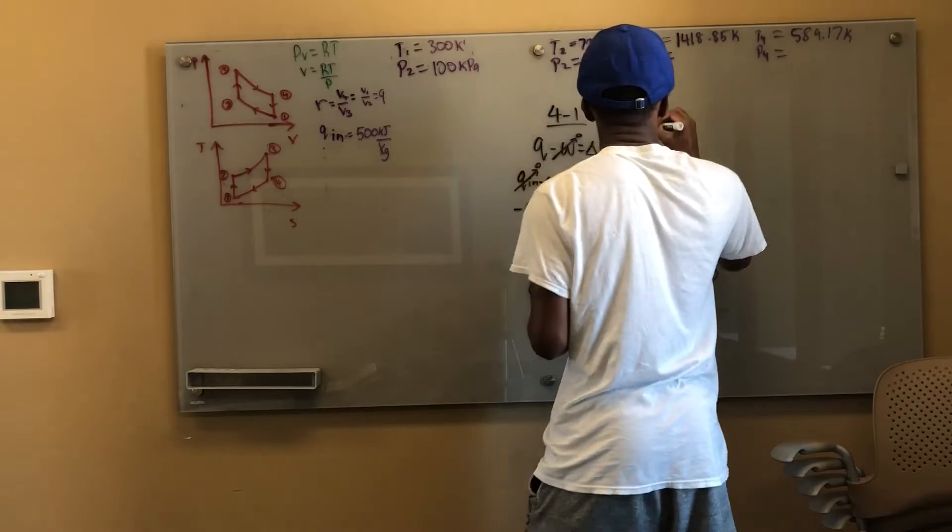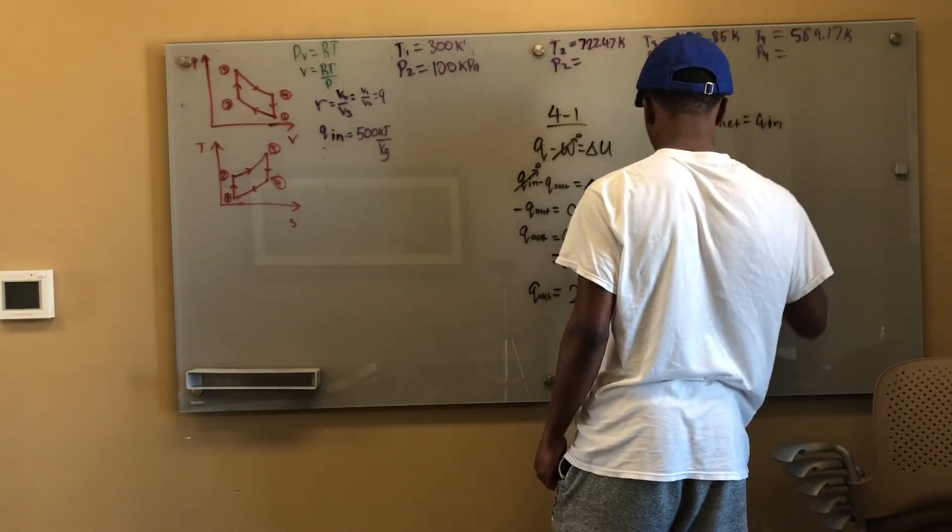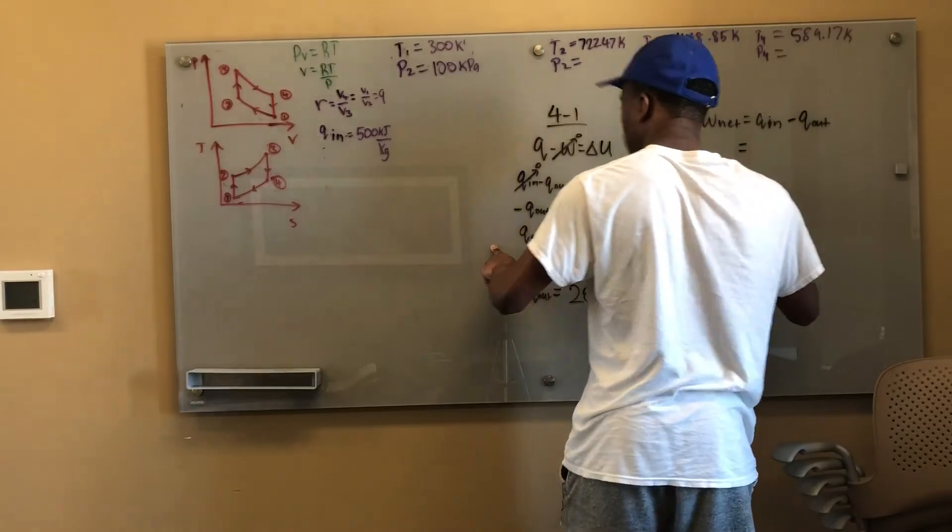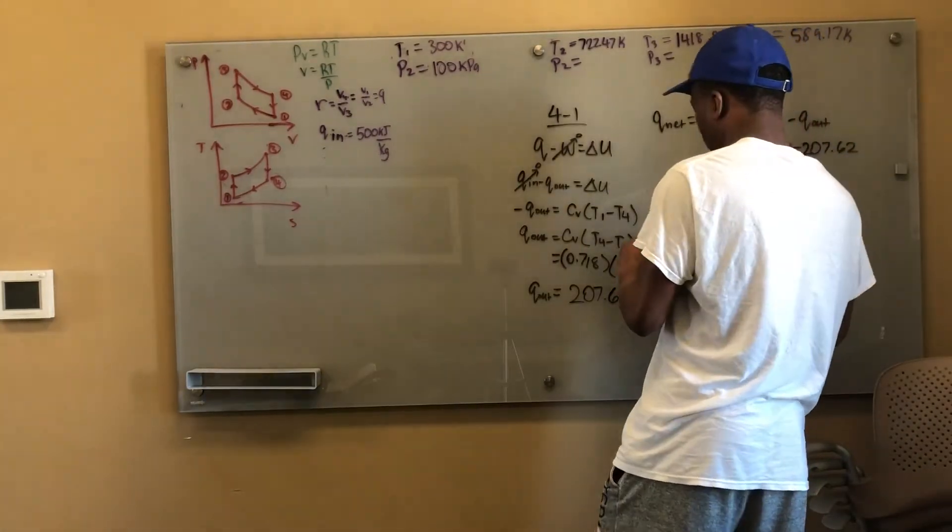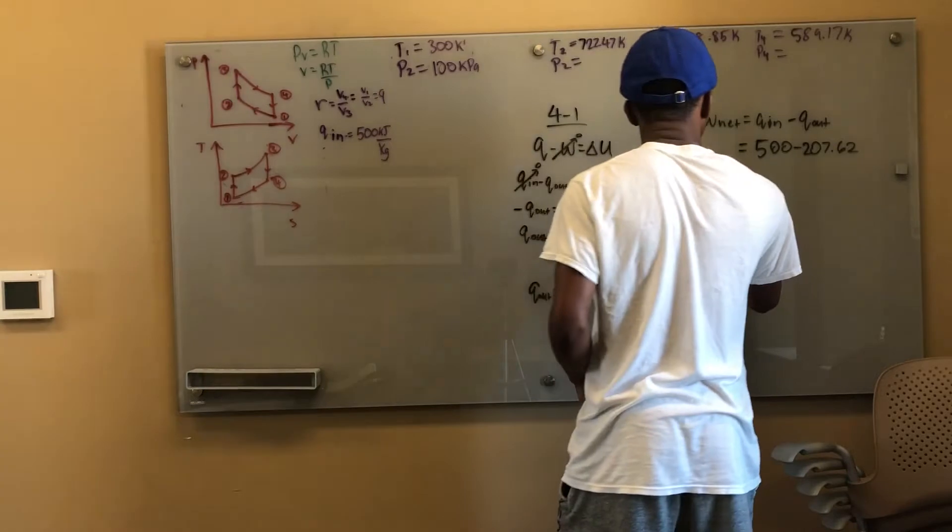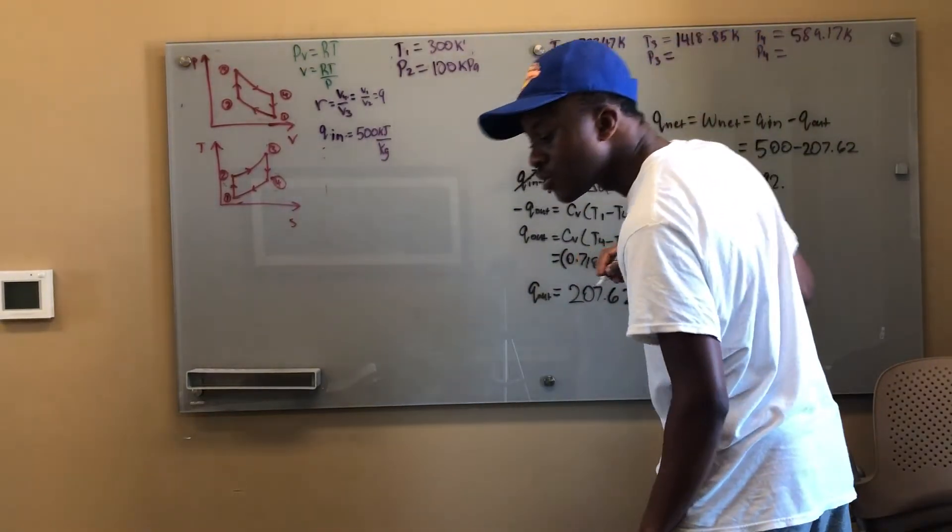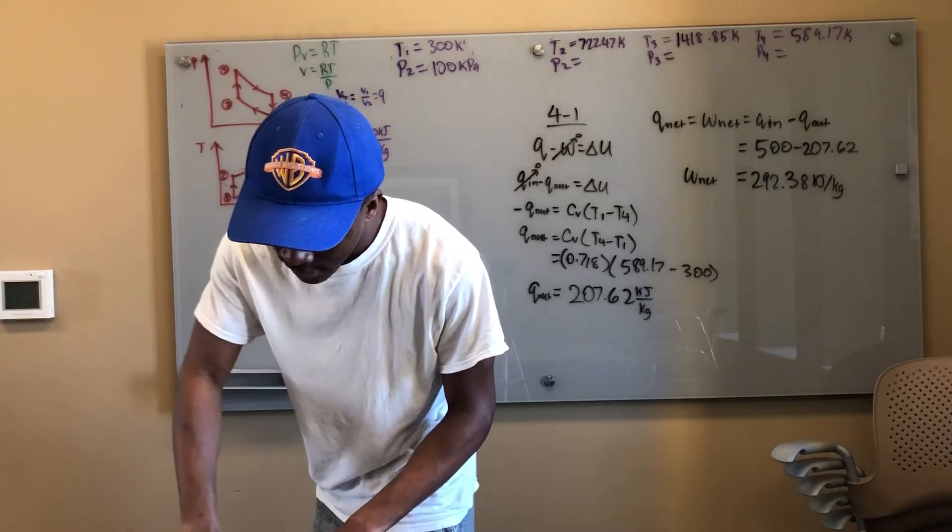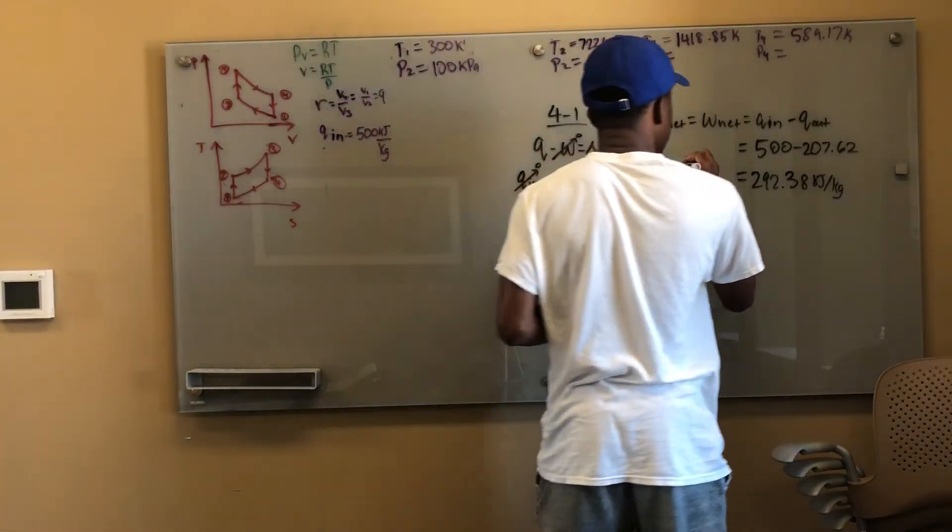So my net heat which is equal to my network, which is what they asked for, is simply Q_in minus Q_out. And this should be higher than this because I want a positive number. That's a good way to check yourself. Check yourself before you wreck yourself. You need to check yourself. So 500 minus 207.62, my network is 292.38 kilojoules per kilogram. And they want network, because they didn't give us like mass or anything, this is just like net specific work, so this is a perfectly good answer.